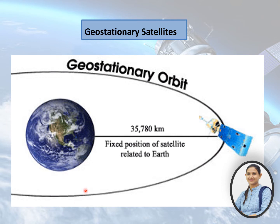On the basis of the distance from the earth's surface, there are various categories of satellites. The first category is geostationary satellites. There is only one geostationary orbit, at a distance of 35,780 km away from the earth's surface. These satellites lie directly above the equator and orbit at the same speed as the rotational speed of earth on its axis, meaning it takes 24 hours to complete one orbit, the same as earth.